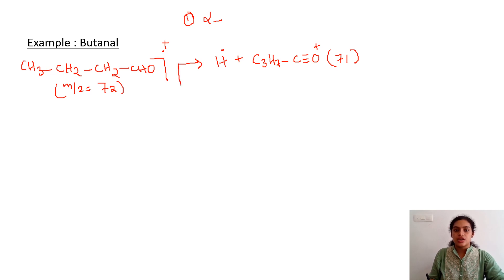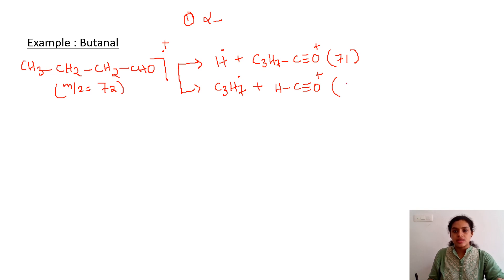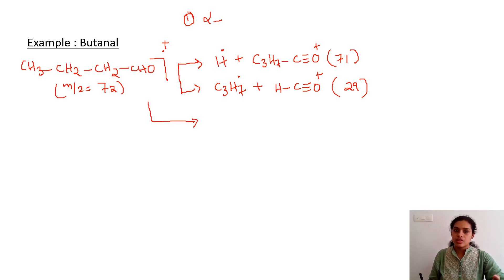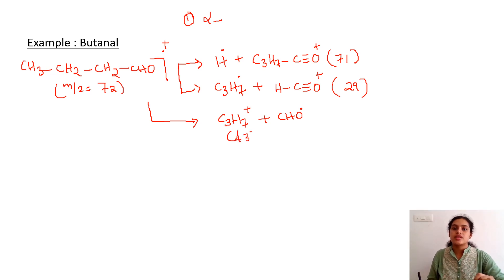In the second mode of alpha cleavage, the alkyl dot going out is C₃H₇ dot, and the remaining species is H-C≡O⁺, with an m/z value of 29. Another mode of alpha cleavage gives C₃H₇⁺, with the remaining CHO dot as a radical. The m/z value of this propyl cation, C₃H₇⁺, is at 43.